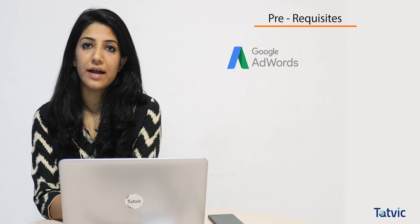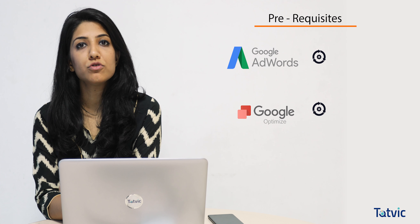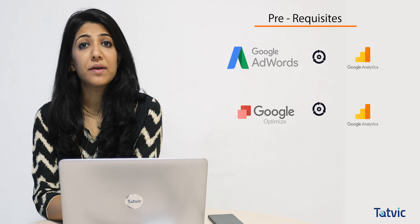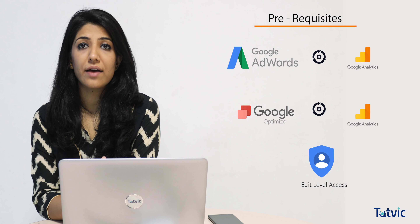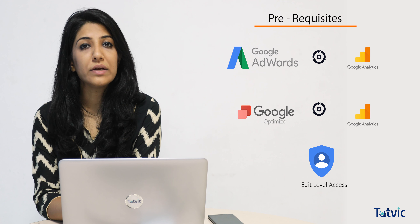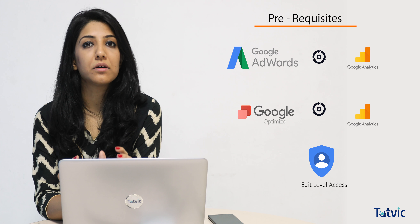So before we begin, the prerequisites are that you need to have your Google AdWords and your Google Optimize accounts both linked with Google Analytics, and make sure that you have edit access on all these three accounts. Only then will you be able to connect AdWords and Optimize with each other.